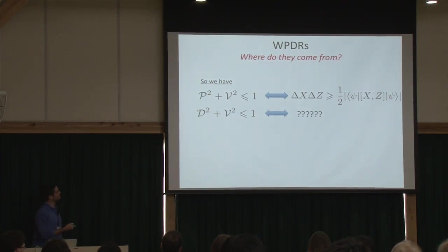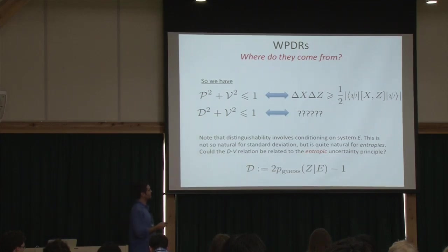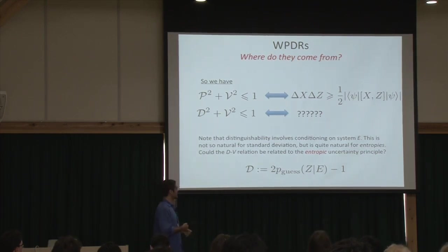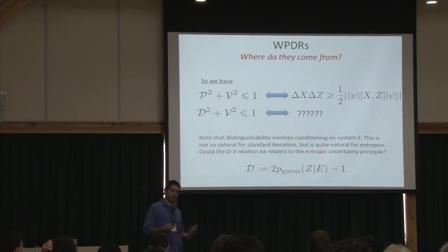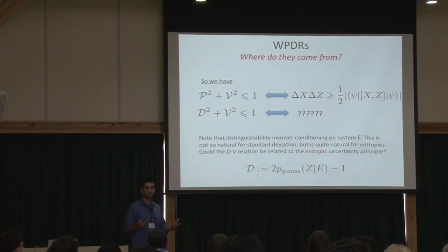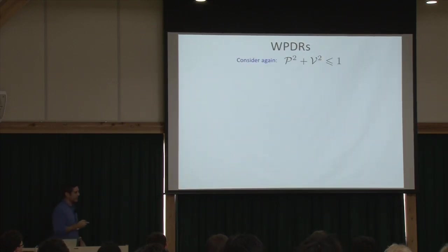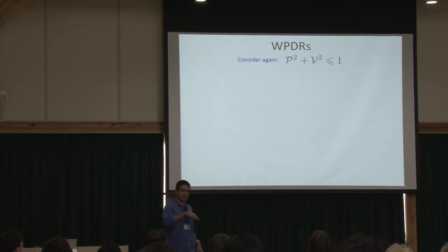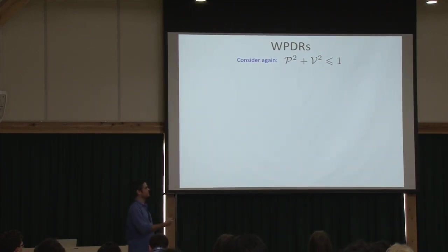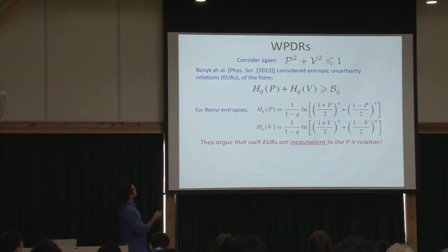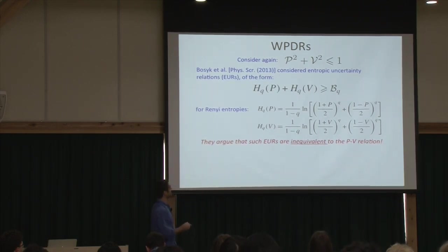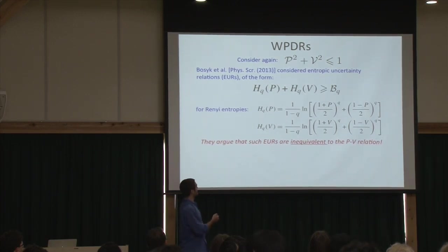But what about the more interesting relation involving distinguishability D? It's a bit strange because it involves conditioning on some other system E. Standard deviations are clunky when it comes to conditioning on things, but entropies are very natural quantities to condition on background or side information. So you might guess that the D² + V² ≤ 1 relation is somehow related to the entropic uncertainty principle. Revisiting even the P² + V² ≤ 1 relation from the entropic perspective, this question was examined in 2013 by some authors who considered uncertainty relations involving Rényi entropies.